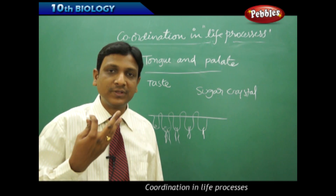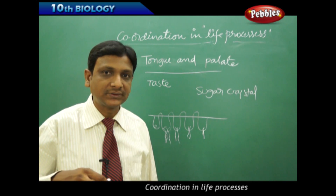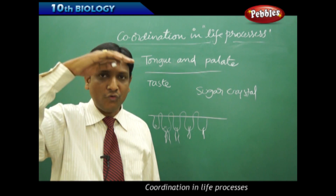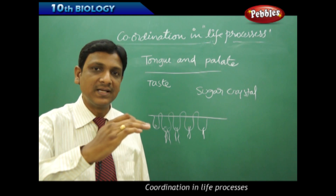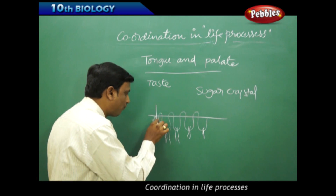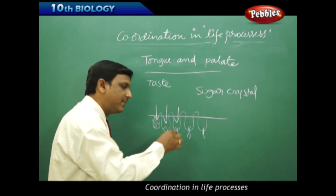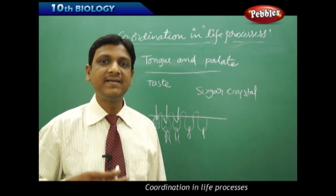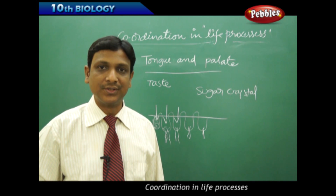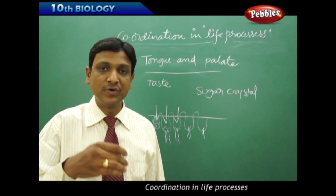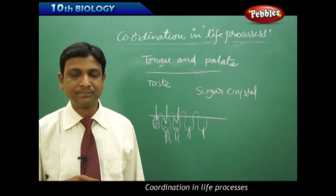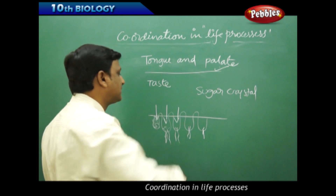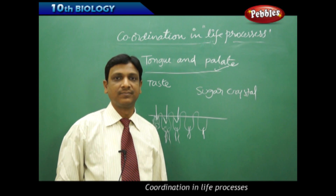If you close your mouth and touch your tongue to the palate, when the tongue is pressed against the palate, it forces the sugar dissolved in saliva into these cups. Then immediately you come to know the taste. So the palate helps in finding the taste of food a bit faster by pushing the food into the cups where it is analyzed. This is the relation between the palate and the tongue in finding taste faster.